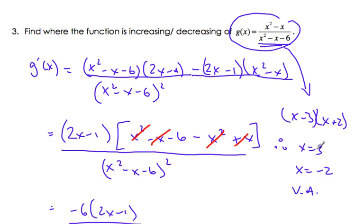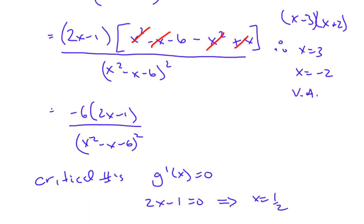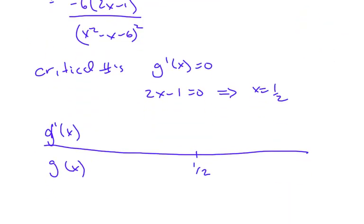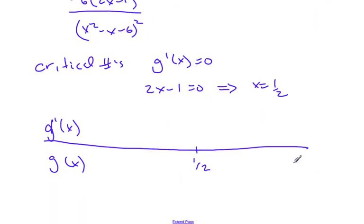The function is not defined here, it's not in the domain. I have to include those values, +3 and -2, on my number line. They can't be critical numbers, but I have to consider them.